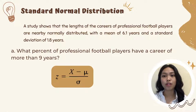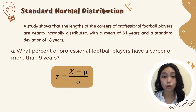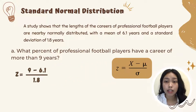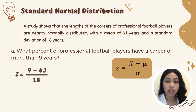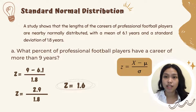Unahin muna natin sagutan yung first question. Dito, ang hinahanap is yung percentage ng professional football players na may career for more than 9 years. We will be using this formula para makuha natin yung Z-score, so input lang natin yung corresponding values dun sa equation — which is yung value natin na 9 minus the mean na 6.1, then divided by the standard deviation na 1.8. 9 minus 6.1 will then be 2.9, then divide natin by 1.8 and the answer will be 1.61.